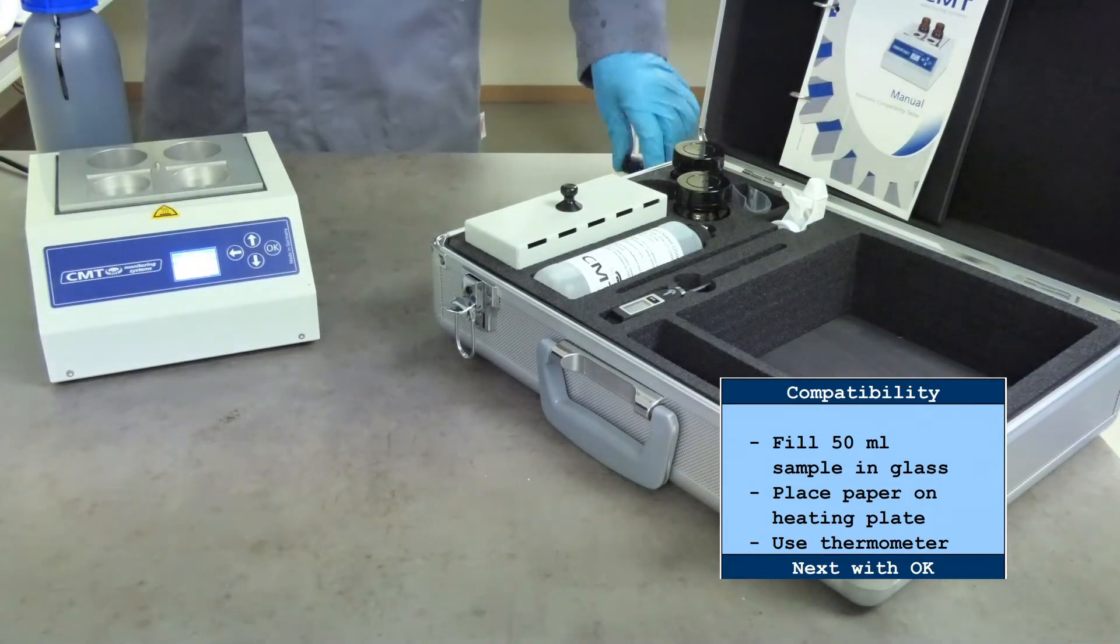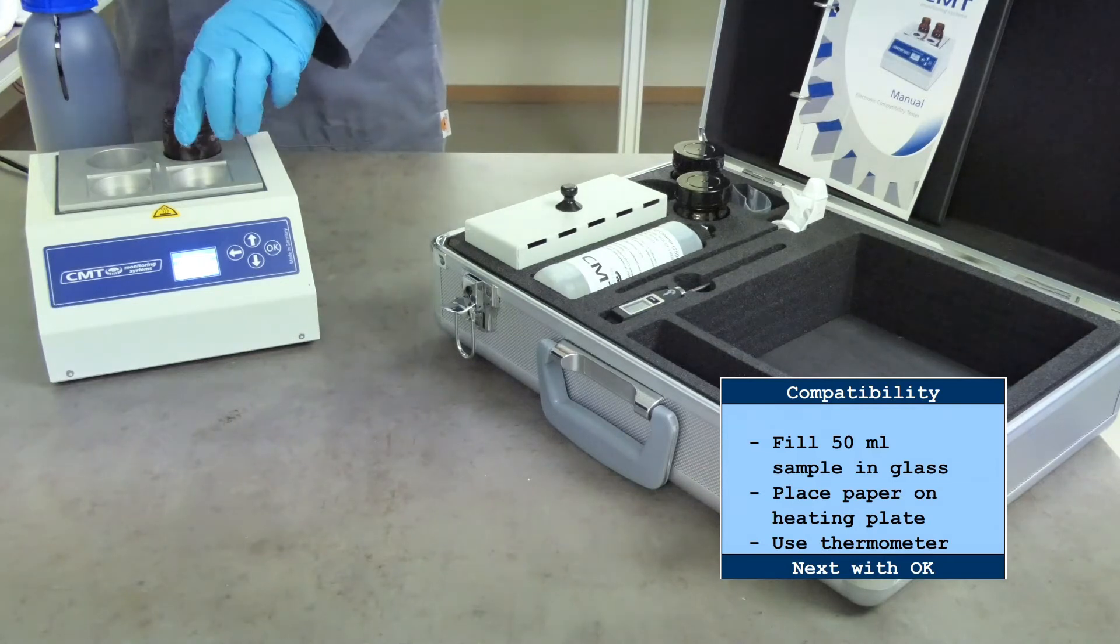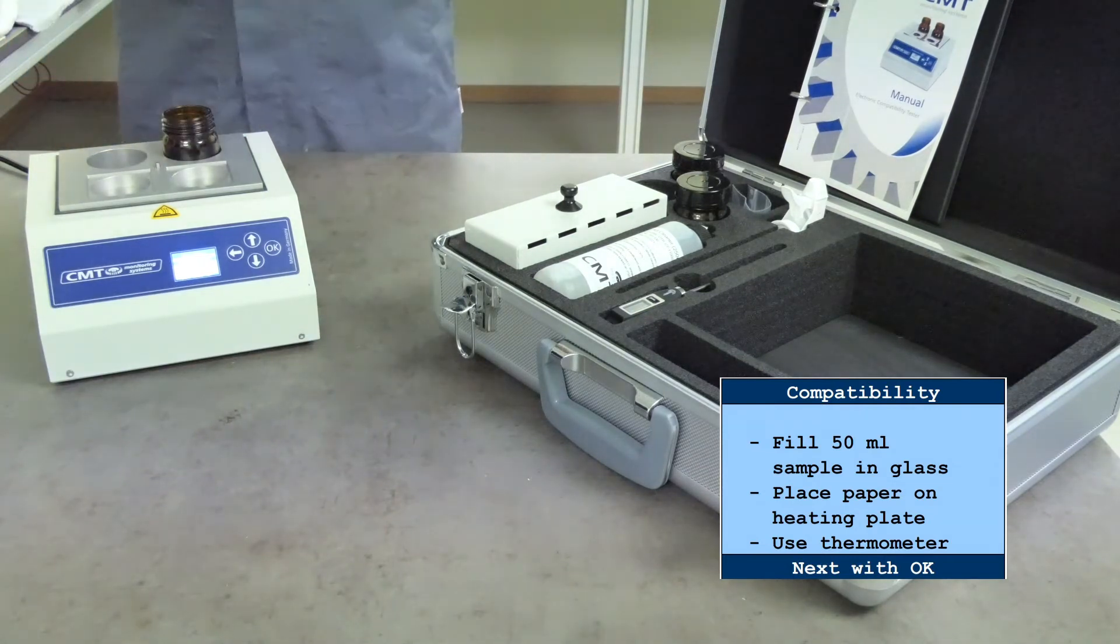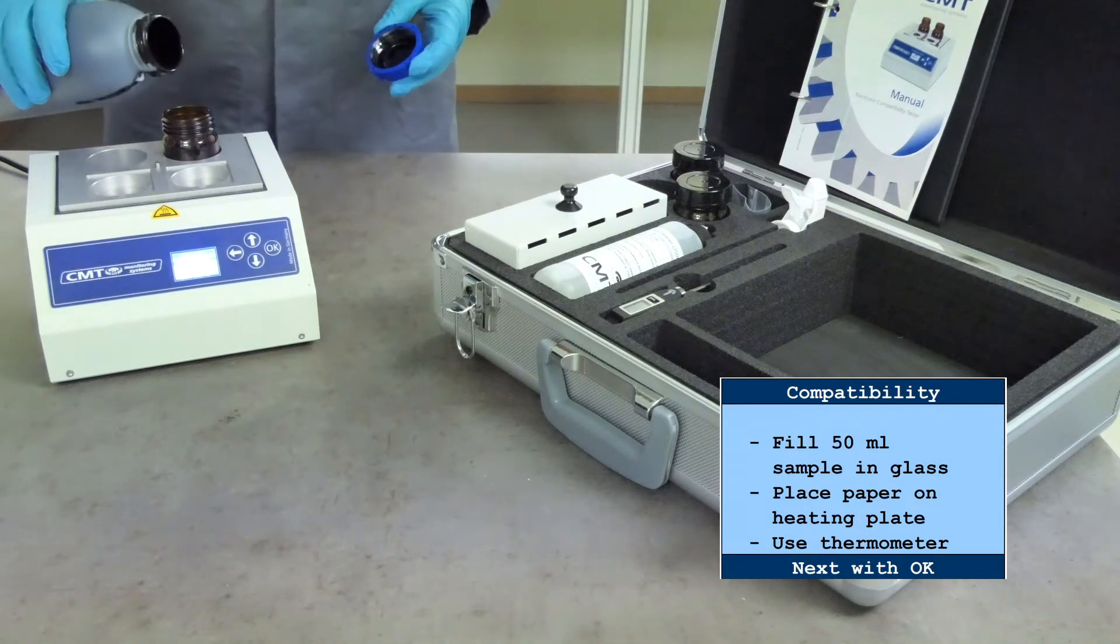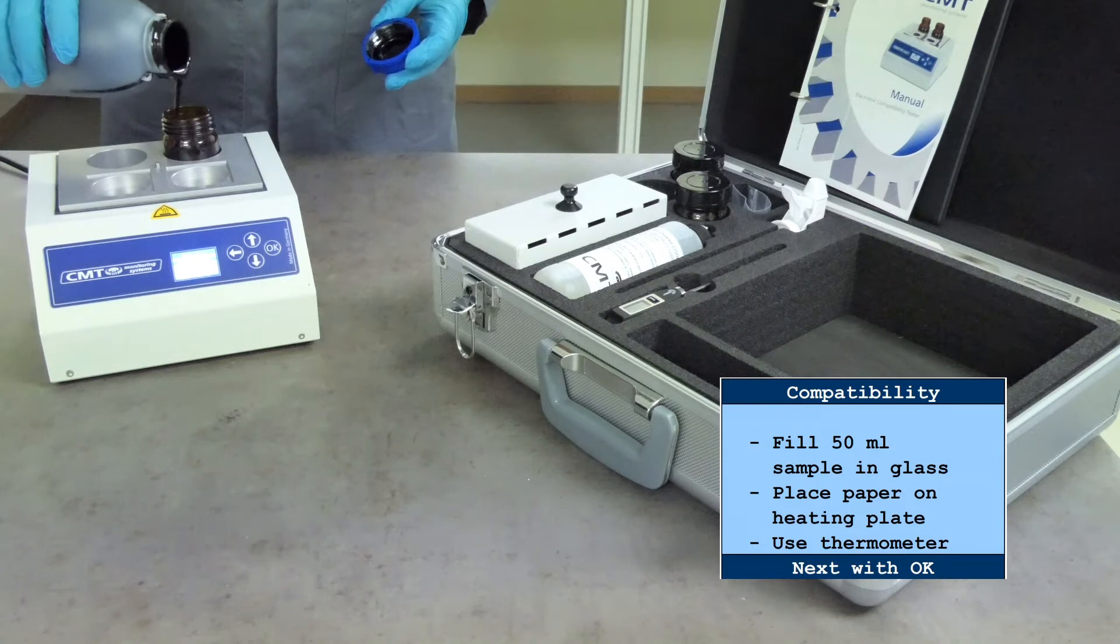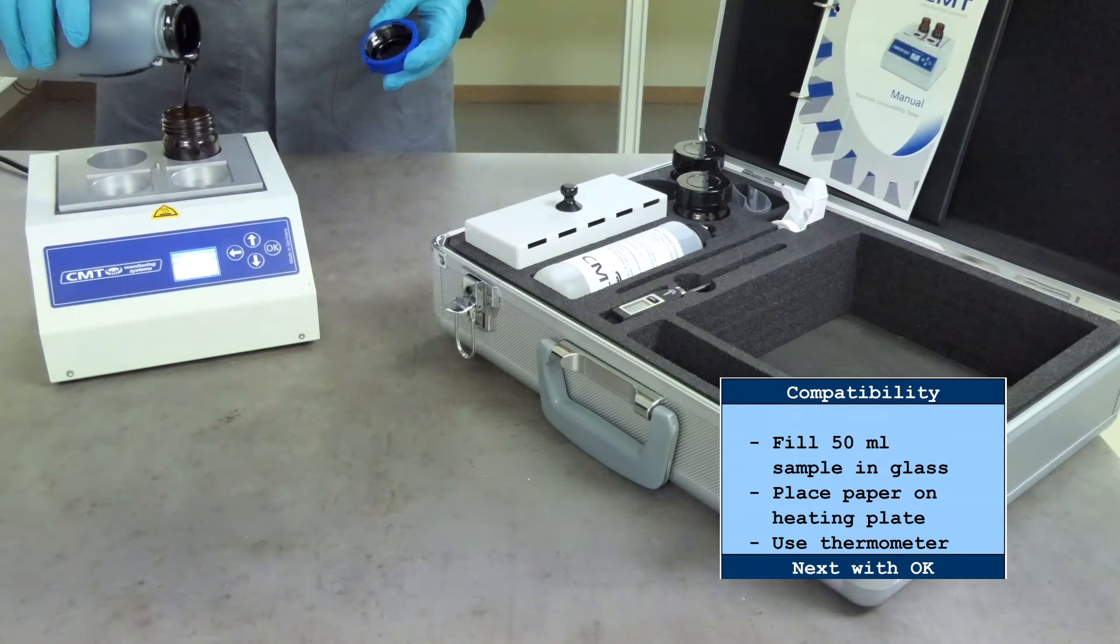Insert a glass bottle into one of the round cavities of the electronic compatibility tester. For a stability test, pour about 50 ml of sample in the 100 ml glass bottle.